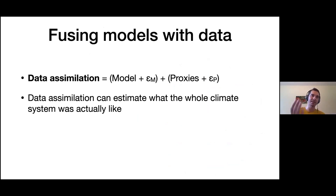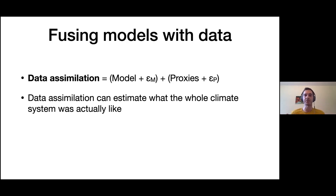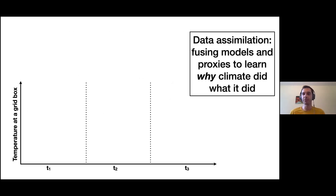In data assimilation we use error estimates in both models and proxies — we're not treating either one as the truth. We understand that models are imperfect and proxies are imperfect, so we use a statistical framework that accounts for both of those issues. I'll step through the fundamental equation of data assimilation, the ensemble Kalman filter, which is the most commonly used approach for paleoclimate. Fundamentally we're fusing models with proxies to try to figure out why climate did what it did.